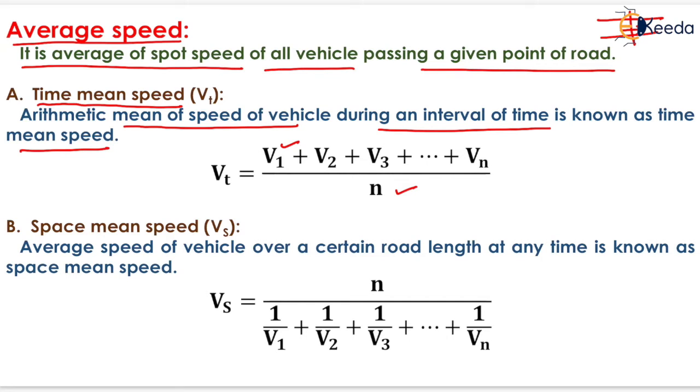Next is the space mean speed, denoted by Vs. Average speed of vehicle over a certain road length at any time is known as space mean speed. The average speed of the vehicle along that road length will be the space mean speed. And it is determined by the formula: n, that is the number of vehicles passing through that particular length of road, divided by 1 by V1 plus 1 by V2 plus 1 by V3 and so on up till 1 by Vn.